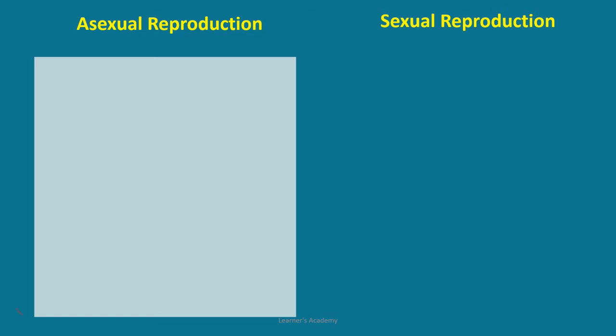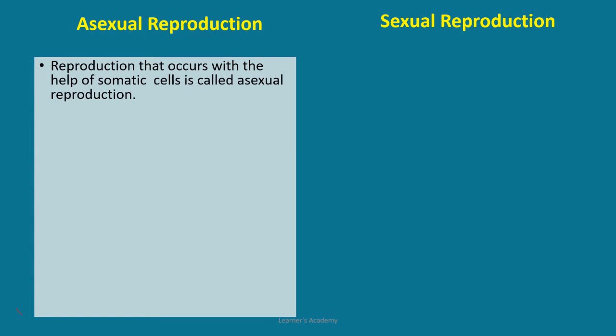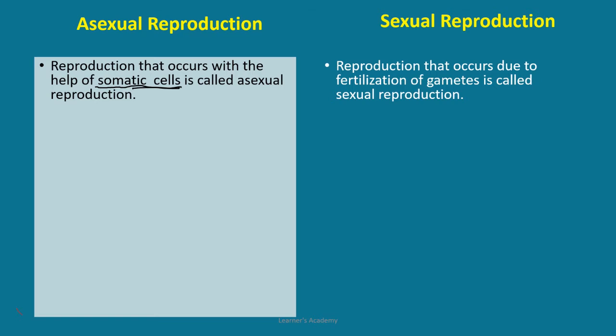Let us see what is the difference between asexual reproduction and sexual reproduction. This layout is given in the textbook as a textbook question and I'm going to give you the same answers. Apart from that, I have even covered more points in the next slides. The first point is that in asexual reproduction it occurs with the help of somatic cells, and in case of sexual reproduction, fertilization of gametes is important.